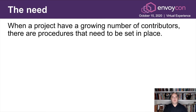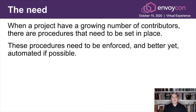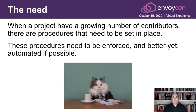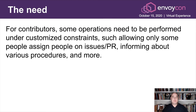Let's define the need for automation. When a project has a growing number of contributors, like Envoy, there are procedures that need to be set in place. This procedure needs to be enforced and, better yet, automated if possible. We don't want any human doing all the bureaucracy by themselves, because that just doesn't scale. For contributors, some operations need to be performed with customized constraints. Every project has different needs — people assign people on issues and PRs, but only specific people can do that, or inform people about other procedures like enforcing the PR body structure.